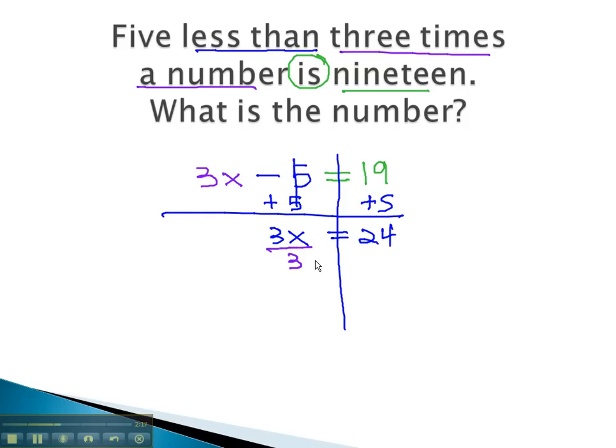Next, we divide both sides by 3 to find x equals 8. This means our number is 8. 5 less than 3 times 8 is 19.